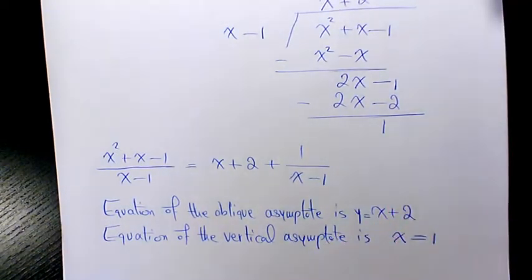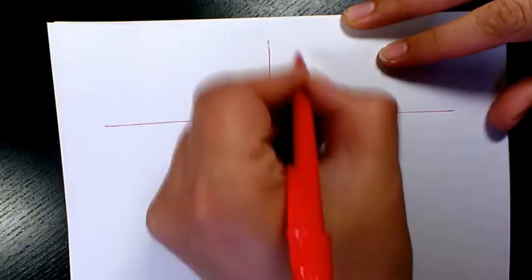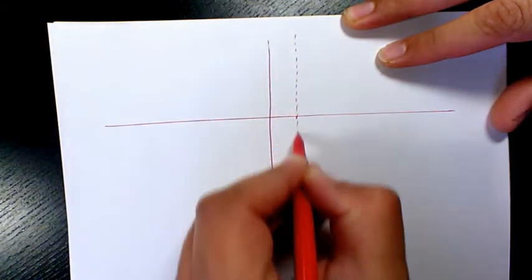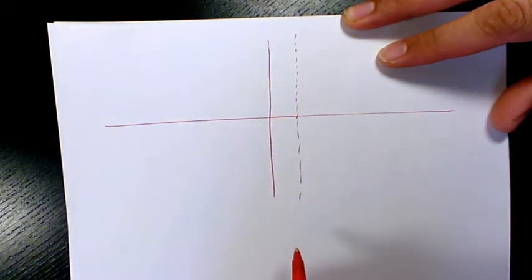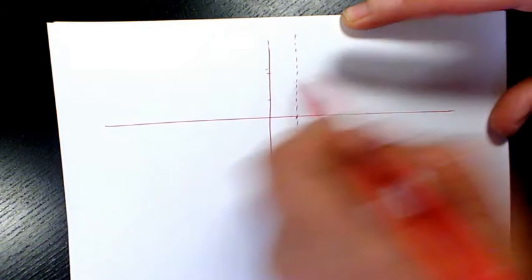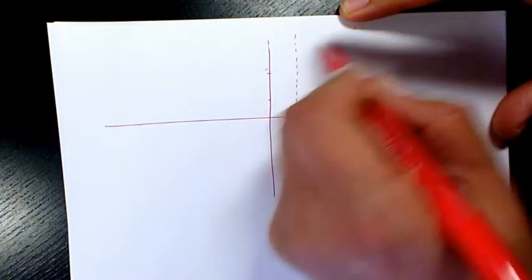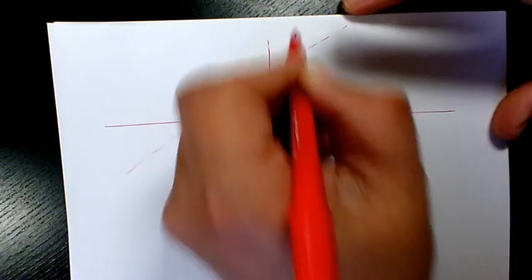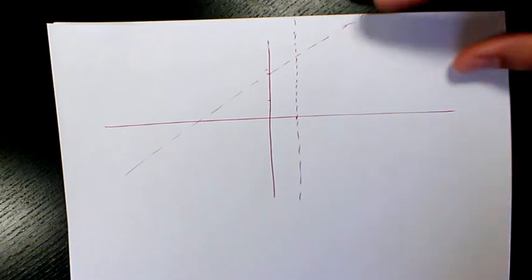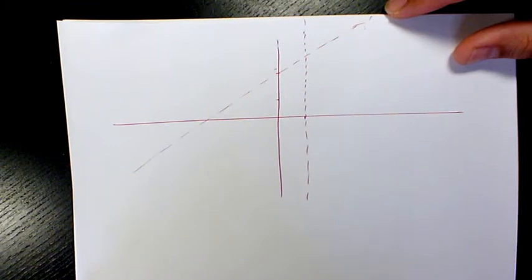We have one oblique asymptote and one vertical asymptote, but there is no horizontal asymptote. The oblique asymptote is y = x + 2. When we graph it, we first draw the vertical asymptote at x = 1, then we draw the oblique (or slant) asymptote as a diagonal line.